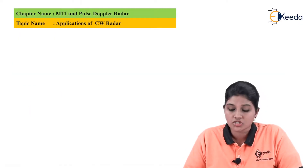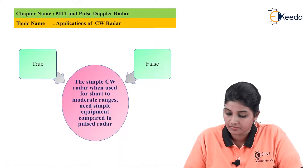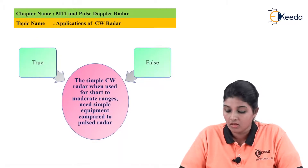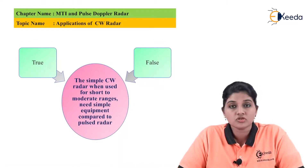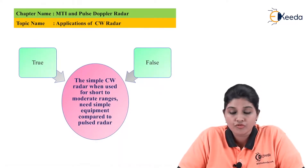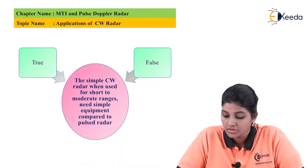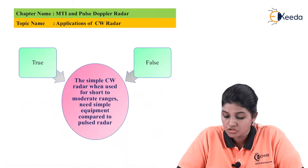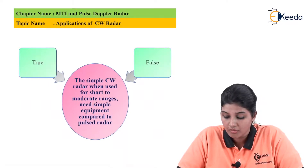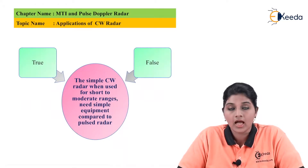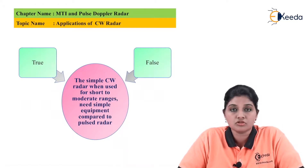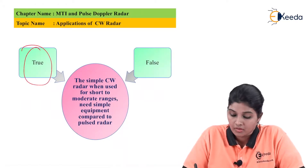The next question is also in the form of true or false. The statement is: the simple continuous wave radar, when used for short to moderate range, needs simpler equipment compared to pulse radar. And the answer here is also true.